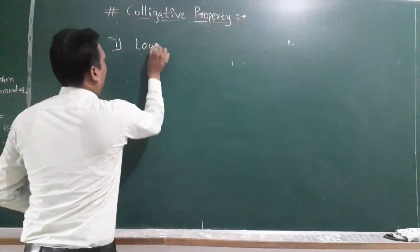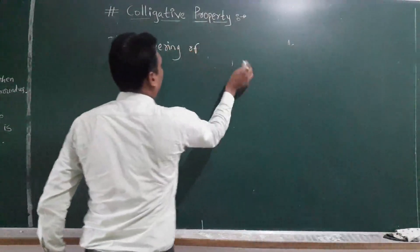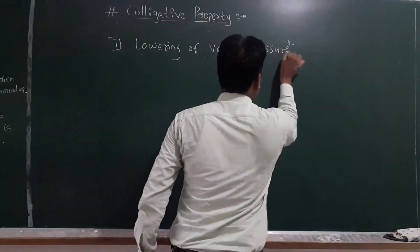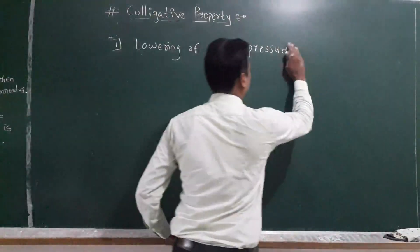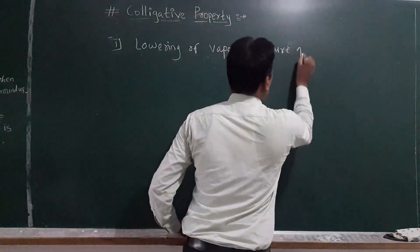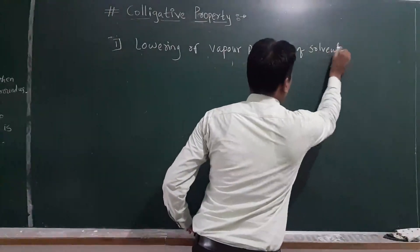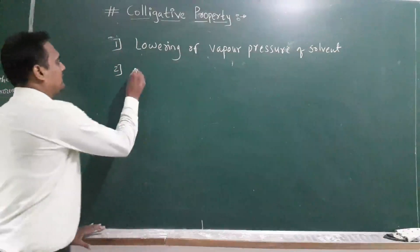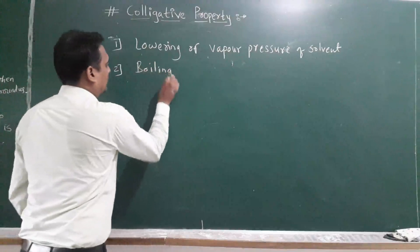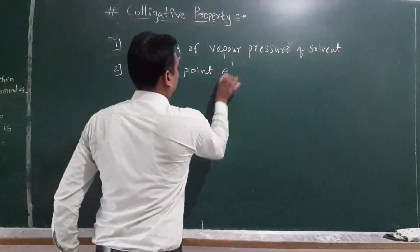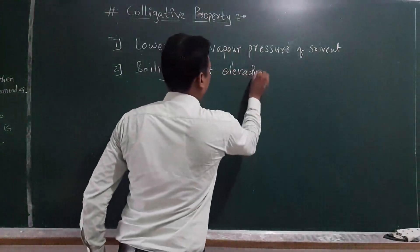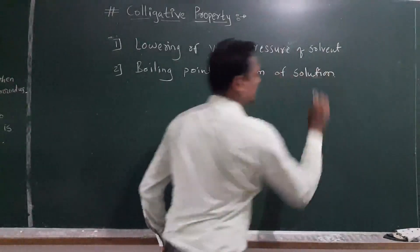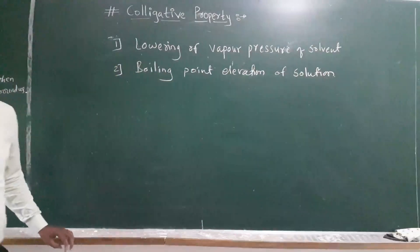Number one is lowering of vapor pressure. The second colligative property is boiling point elevation of solution — that is, the elevation of the boiling point of the solution.